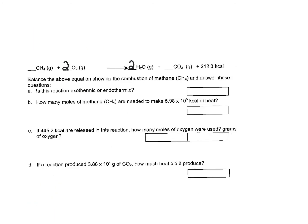You should be able to recognize that when we look at a chemical reaction, if energy is on the product side, then energy is coming out. If energy was on the reactant side, then energy is coming in. So having energy on the product side makes this an exothermic reaction.